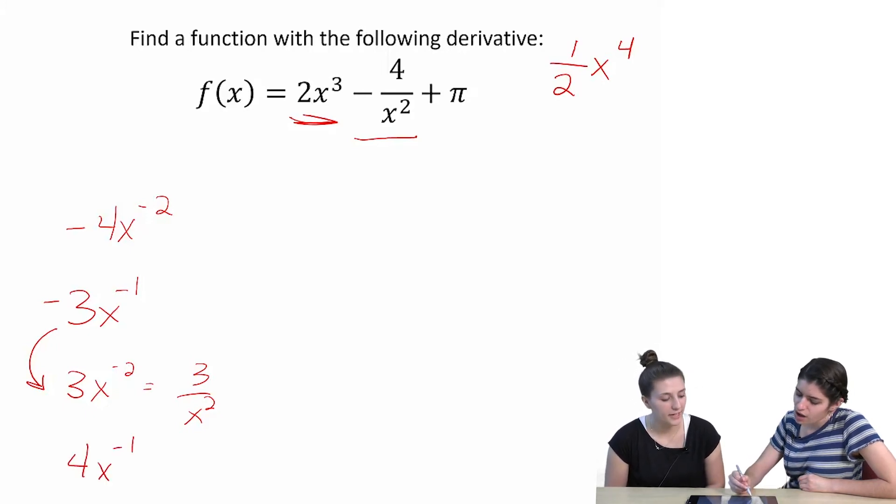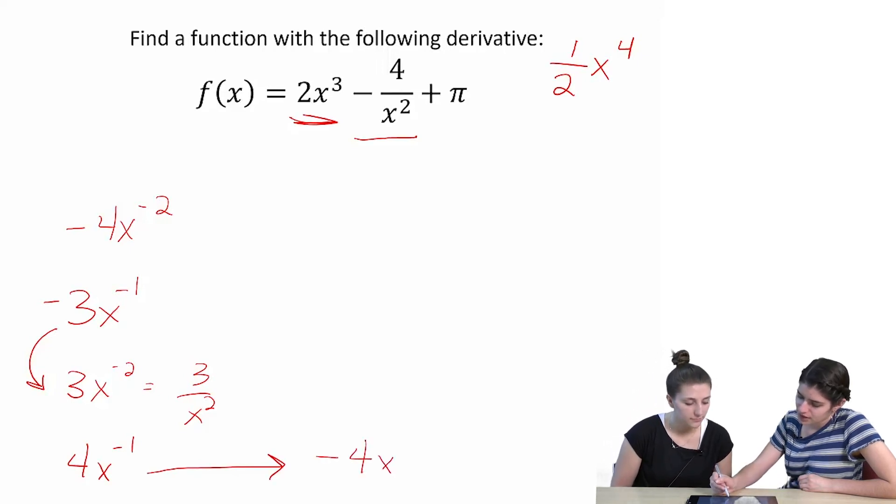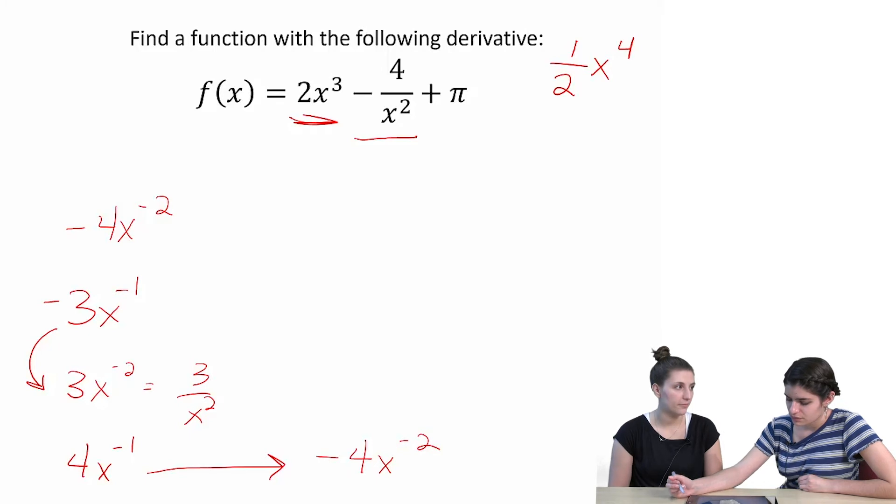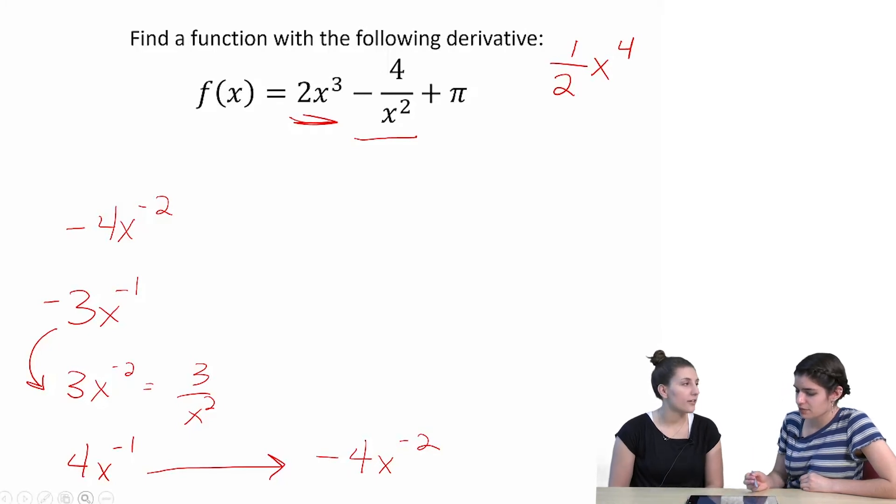Just make it a 4. We get 4x to the negative first. 4x to the negative first. Okay. Sure. And then if we took the derivative of that. Oh. Yeah. You're right. Look at that. Perfect. You get negative 4x to negative 2. Okay.